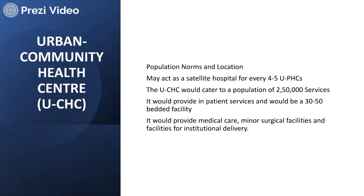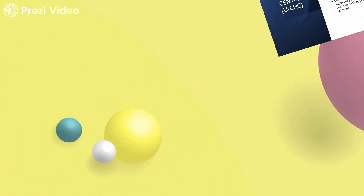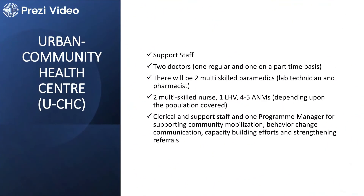Regarding urban community health centers — when a disease cannot be treated at the primary health center, it is referred to a community health center. Similar arrangements exist in rural health centers. They provide inpatient services, have more beds with 30 to 50 bedded facilities, provide better care, minor surgery facilities, and facilities for institutional deliveries. These urban community health centers are well equipped with supportive staff, doctors, and skilled paramedical staff.